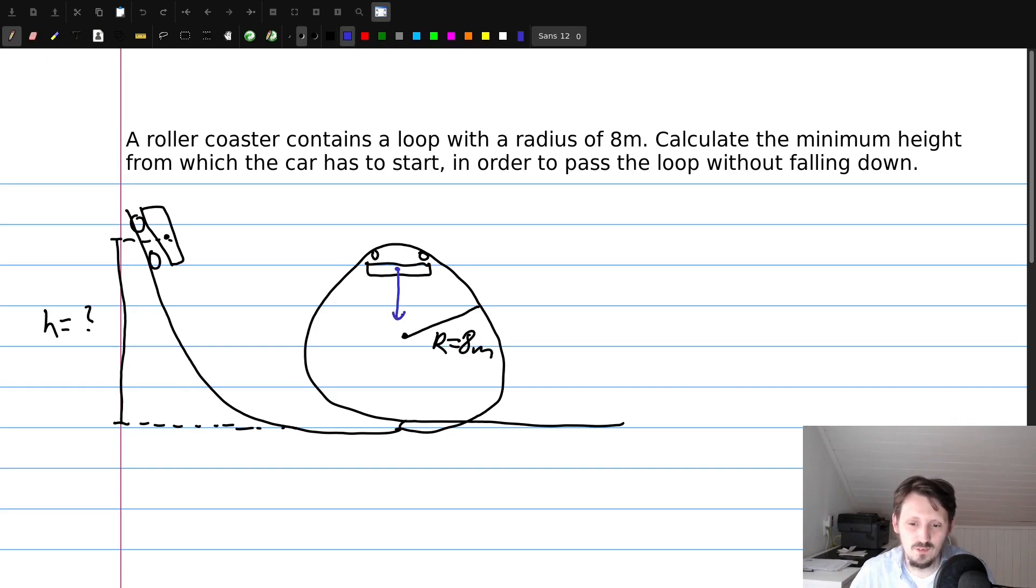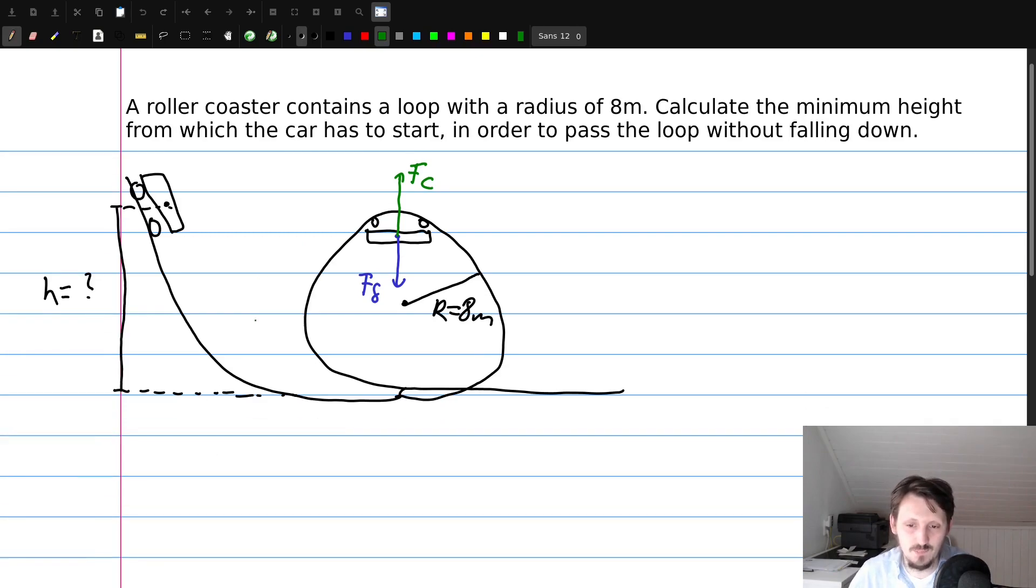Then here of course, as I said, in the highest point the car should not fall down, so we have two forces here acting on that which we also should insert into our sketch. One is of course the gravitational force because the car has a mass, so the earth pulls on it. On the other hand we have of course a force, an uplifting force, which is going in the opposite direction which has to compensate the gravitational force in order not to fall down. This is actually the centrifugal force.